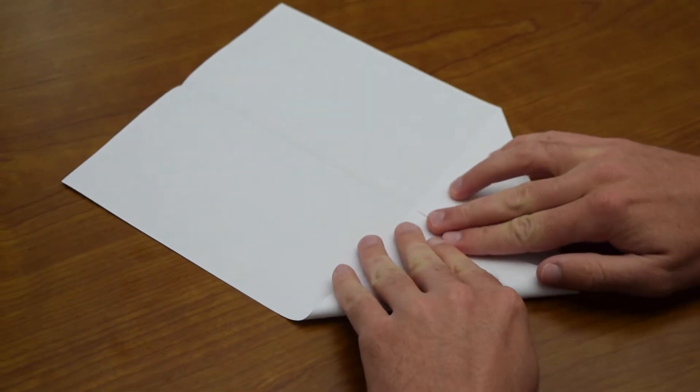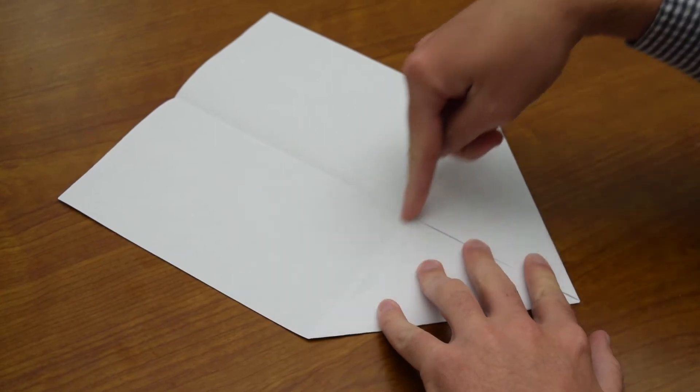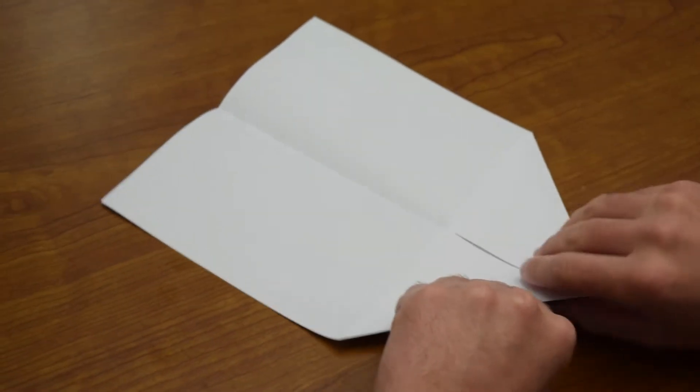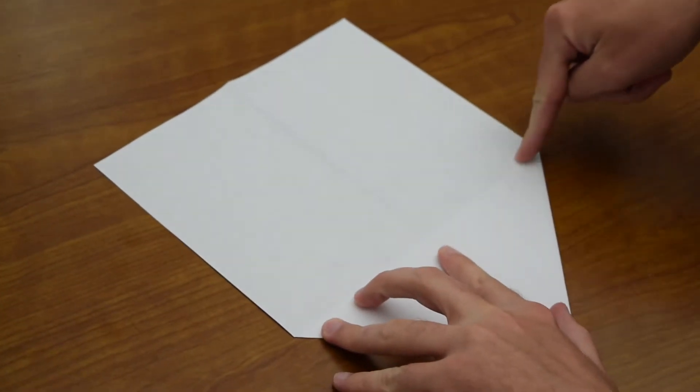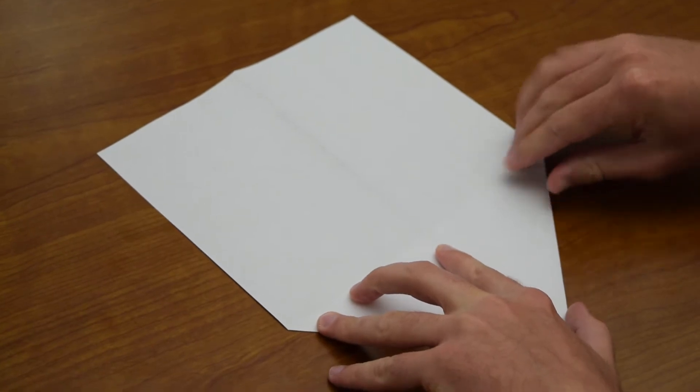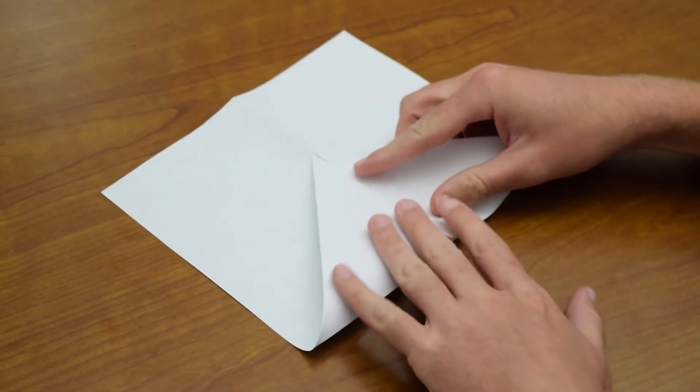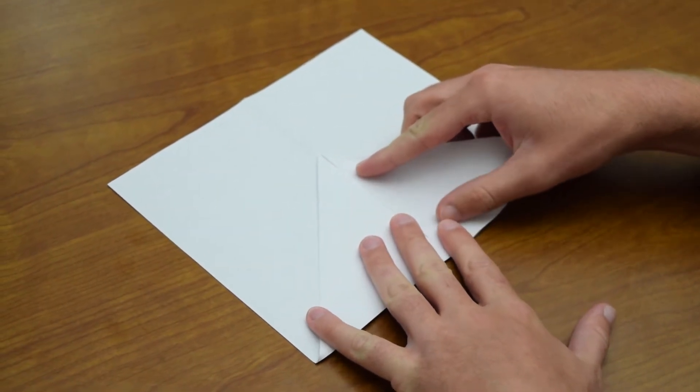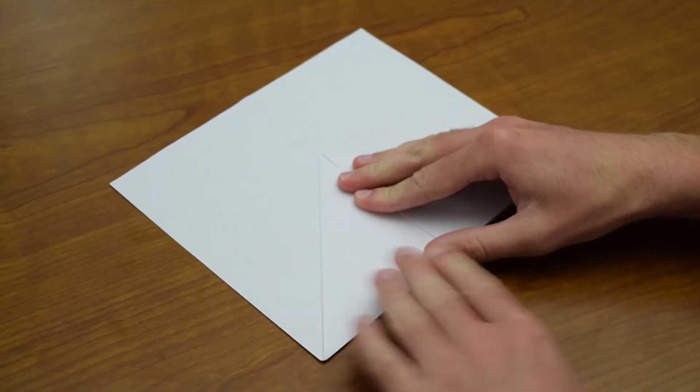You try and get the bottoms of those two triangles to line up in a straight line right here. Once that's done you flip the whole thing over. You find that same line, you can kind of see through the paper right here. Once you see that line you want to fold on that line so that now your airplane looks like this.